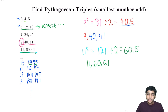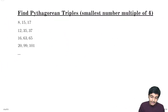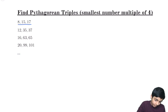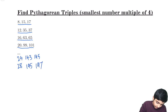Just as there are Pythagorean triples with the smallest number odd, there are also Pythagorean triples with the smallest number even. We can find Pythagorean triples where the smallest number is a multiple of 4: 8, 15, 17; 12, 35, 37; 16, 63, 65; 20, 99, 101; 24, 143, 145; 28, 195, 197, and so on.